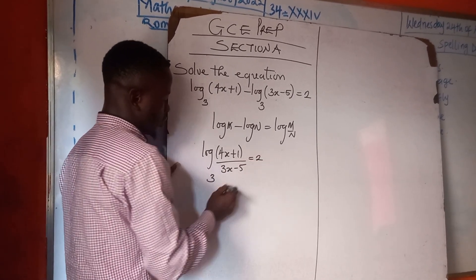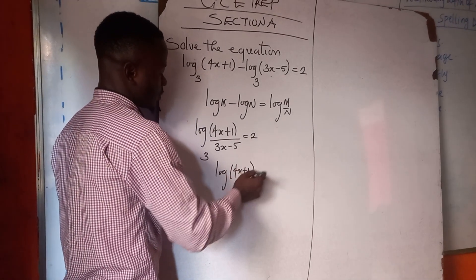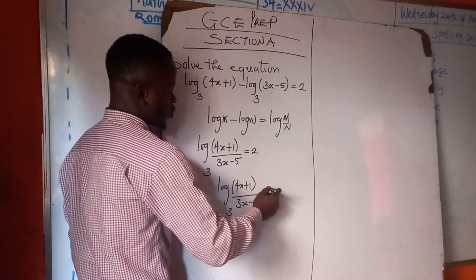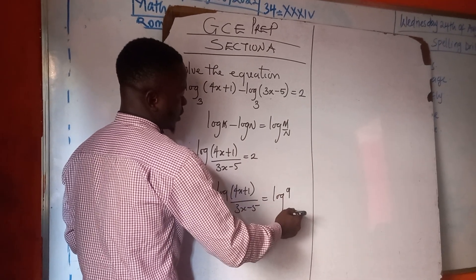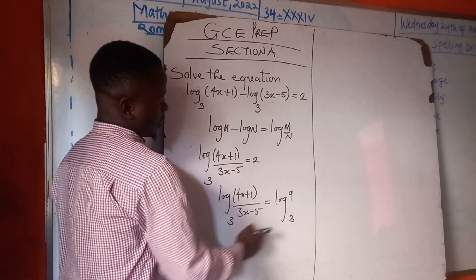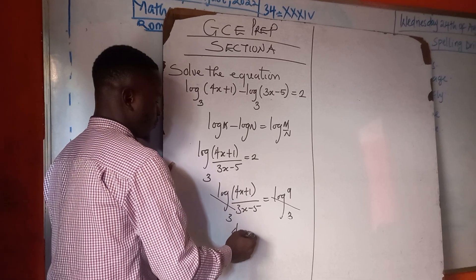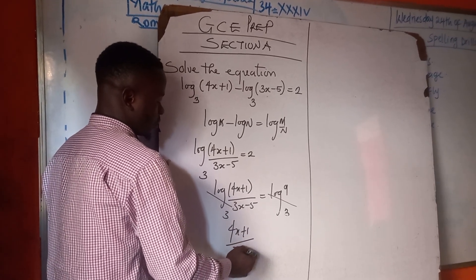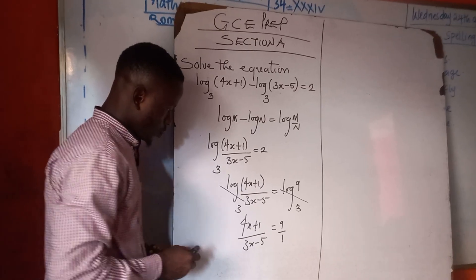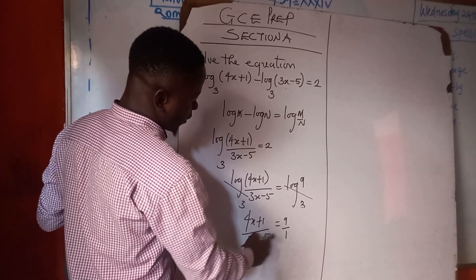This means we'll have log((4x+1)/(3x-5)) base 3 equals 2. We convert the 2 to log(9) base 3, since log base 3 is common we cancel it out, giving us (4x+1)/(3x-5) equals 9.